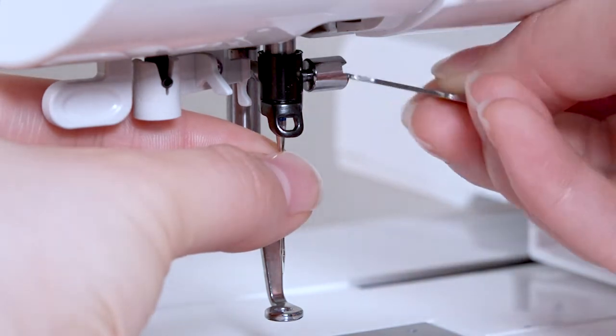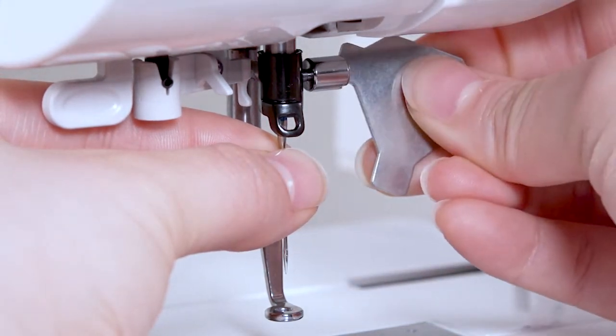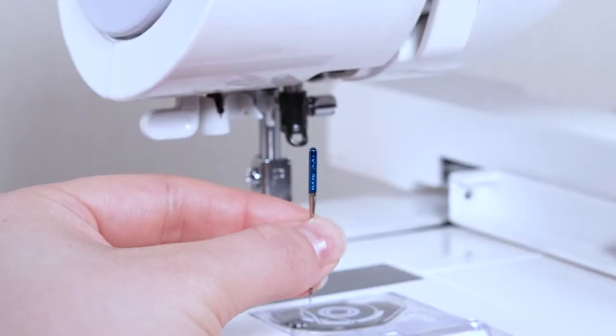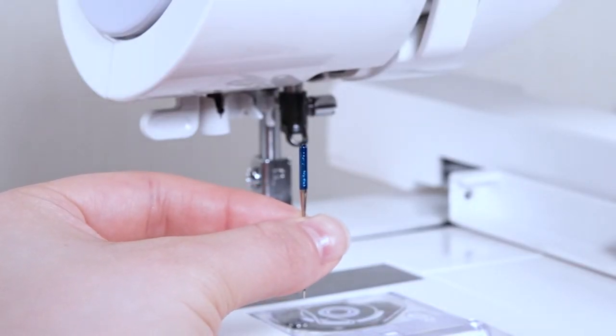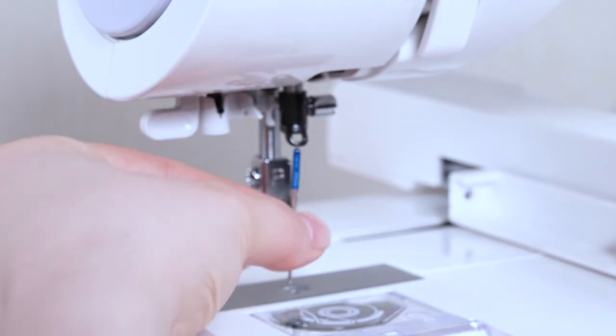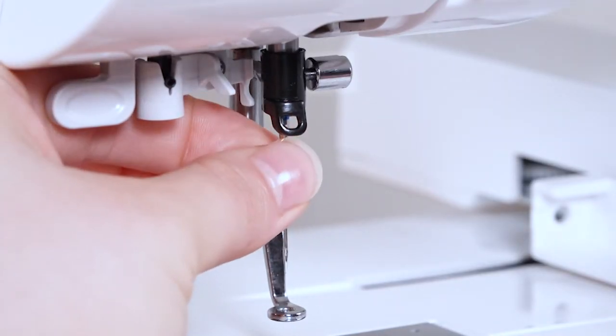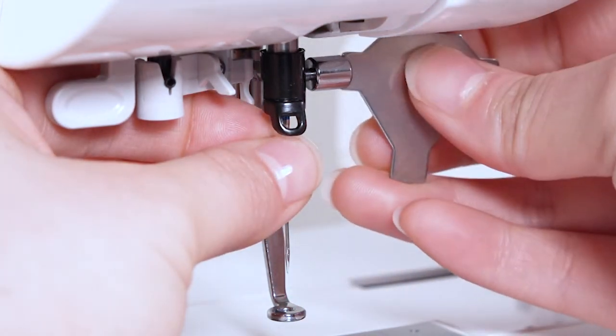Loosen the needle clamp screw with a screwdriver and remove the needle. Insert a new needle with the flat side facing back. Push the needle up against the stopper and tighten the needle clamp screw securely with the screwdriver.